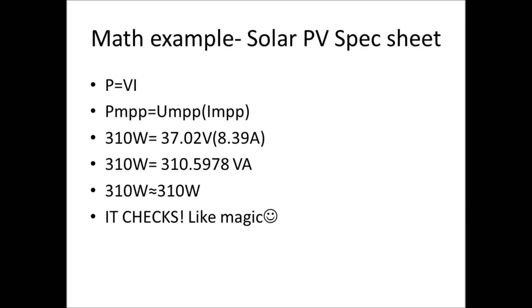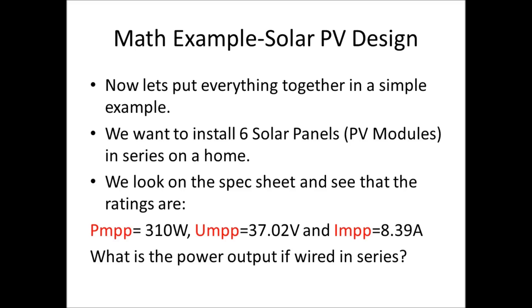So Pmpp equals Vmpp times Impp. So we have 310 equals 37.02 times 8.39. 310 watts equals 310.5978 volt-amps. As we talked about earlier, volts times amps is watts, so volt-amps is the same as watts. So it checks, it's like magic. It's about 310 watts on each side, so it checks.